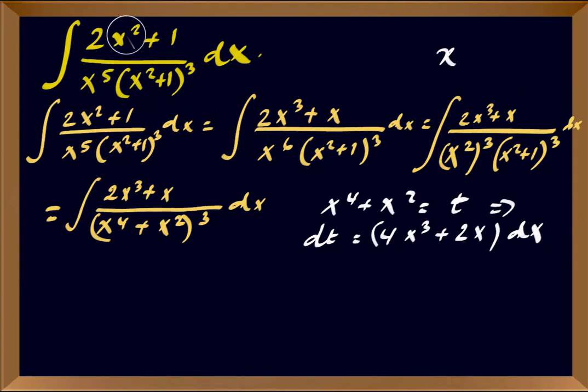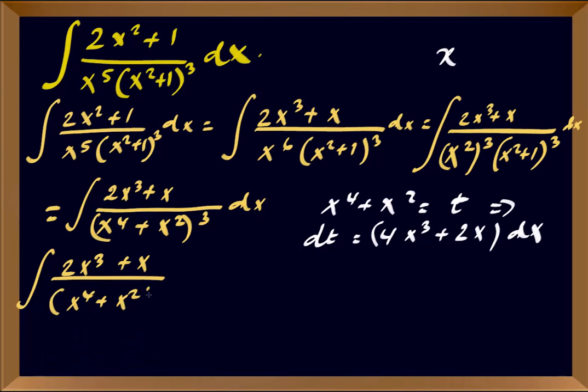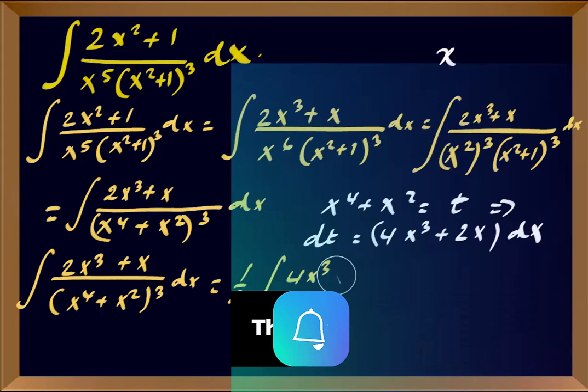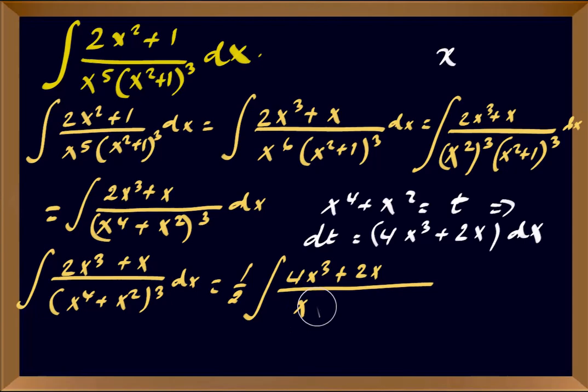So we multiply the numerator by 2 and divide the full integral by 2. This gives us: one half of the integral of (4x³ + 2x) over (x⁴ + x²)³ dx.